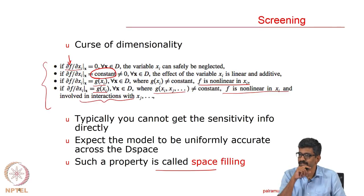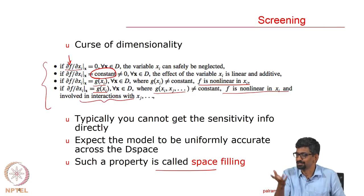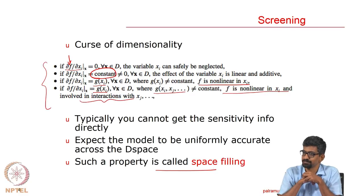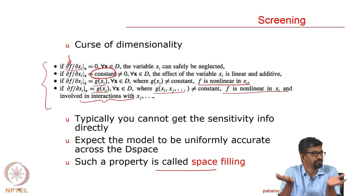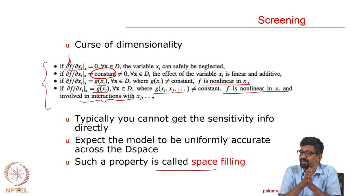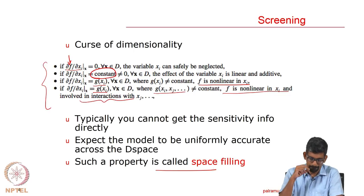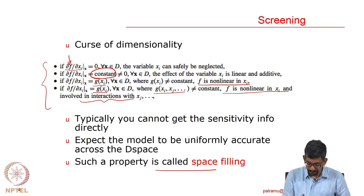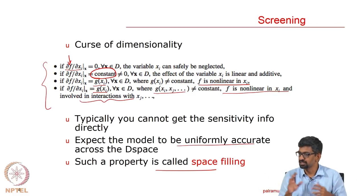Consider an analogy: someone walks into my room and says select one student to send to a conference. I cannot choose because I have no information on who you are, how you perform, whether you will benefit from the conference. Unless I have that information, I cannot say put 40% of the points here and the remaining there. So you expect the model to be uniformly accurate across the design space — that is what you should do.